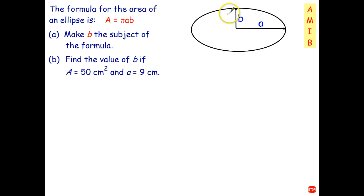Anyway we want to rewrite this equation over here to make b the subject. So let's get started. So let's write the formula down first. A equals pi times a times b.